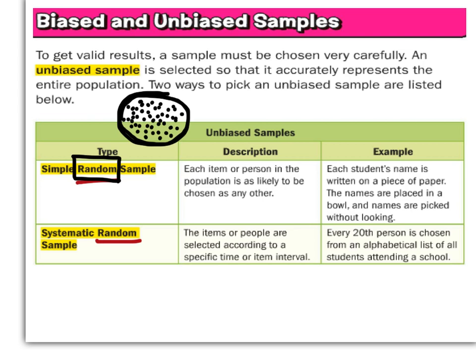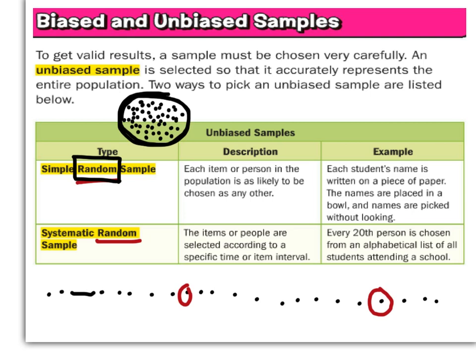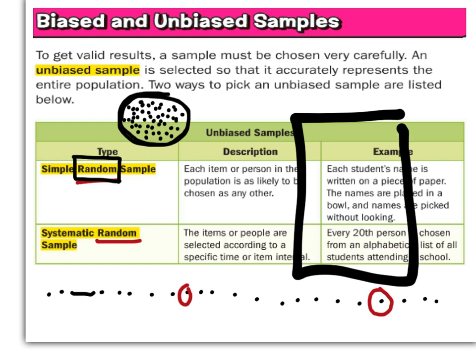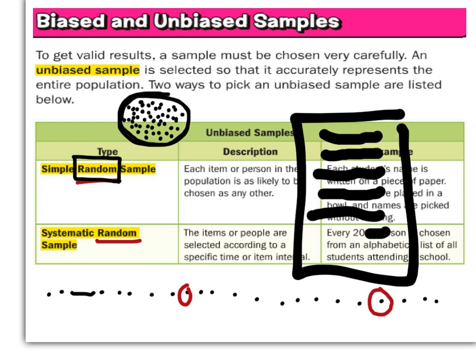Systematic random sampling is where you take every certain number of people. Say you have people in a line and you're going to take every tenth person. You can also do this with a list — survey every other person, every even-numbered person, and so forth. That is a systematic random sample.